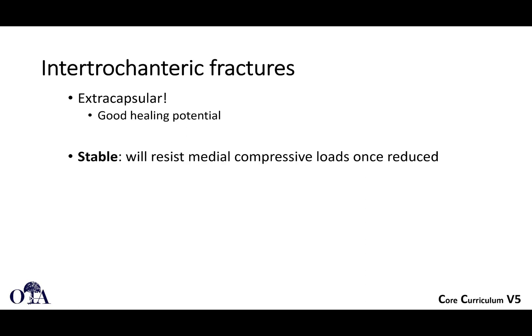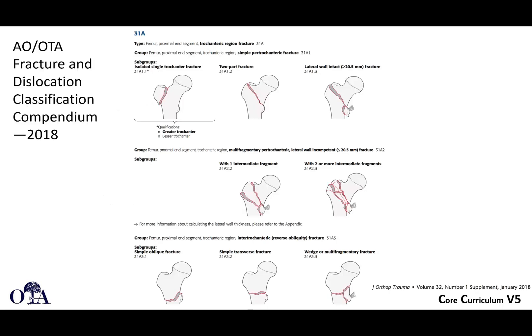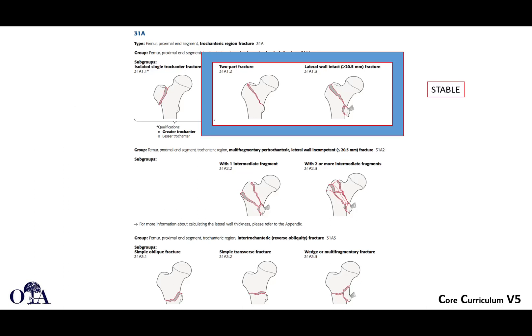Stable fractures will resist medial compressive loads when reduced, and unstable fractures are going to collapse into varus or the shaft is going to displace medially. When you see an intertrochanteric femur fracture, you have to decide: is it stable or unstable? In the OTA fracture classification, intertrochanteric femur fractures are 31A — the femur is the third bone and one indicates the proximal segment.